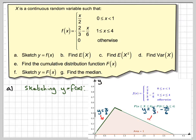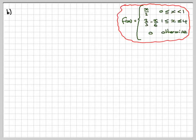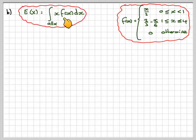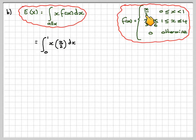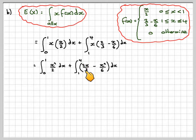Now to find the mean. E of x is the integral over all x of x times f of x dx — similar to how you find the mean from a frequency distribution. So we integrate from 0 to 1 of x times our first function, plus the integral from 1 to 4 of x times our second bit. Expanding, we get the integral from 0 to 1 of x squared over 2 dx, plus the integral from 1 to 4 of 2x over 3 minus x squared over 6 dx.